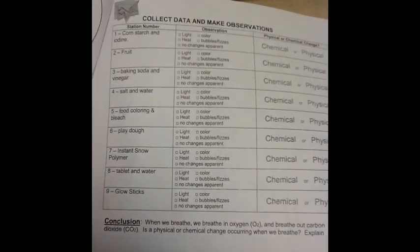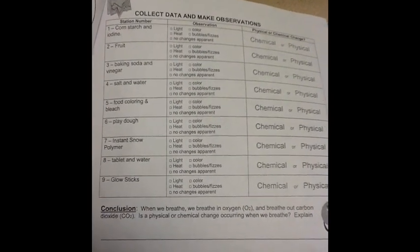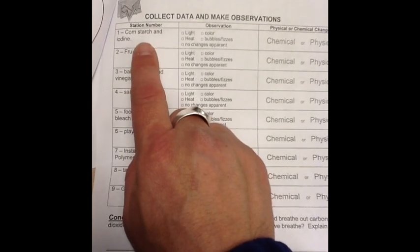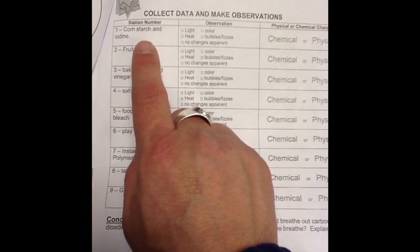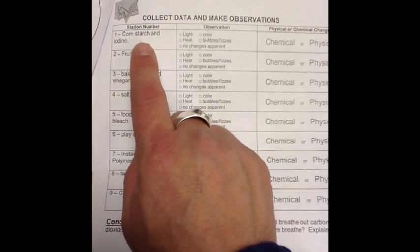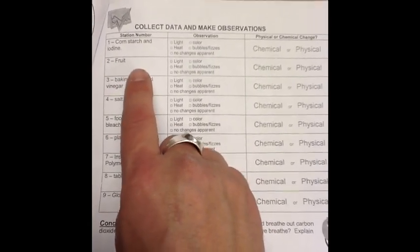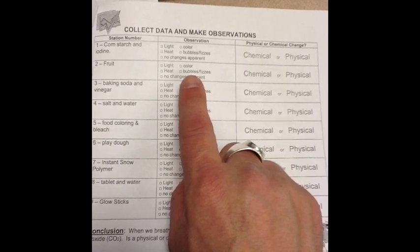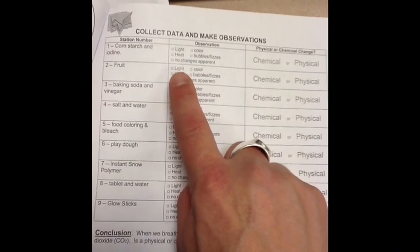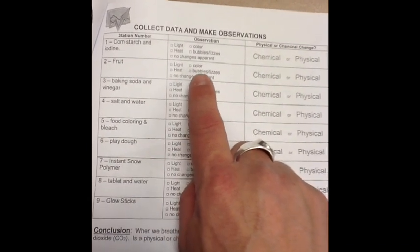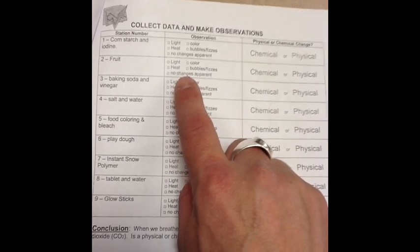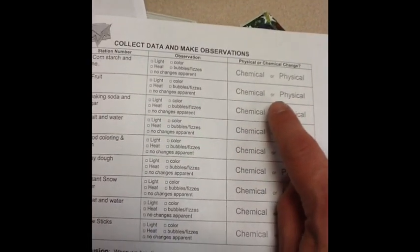And when you're done, watch the videos. As you go through the videos, they're all here together in this video, but it'll have a big number, and I guess we start with two. So two will go with the fruit. You fill in which observation you made. Was there a change in light, change in heat, change in color, was it bubbles or fizzes, or no other apparent changes? Then come over here and circle which one you think it is.